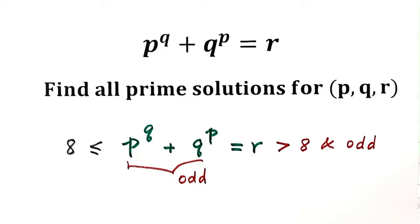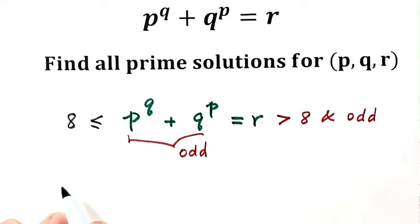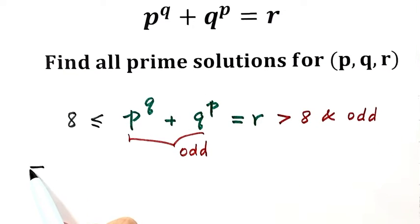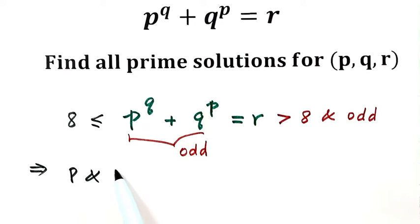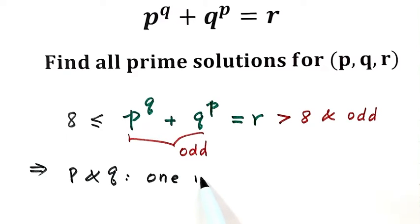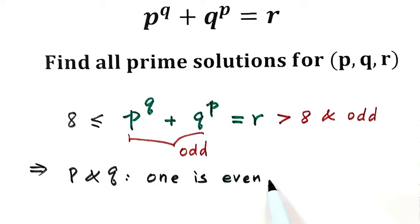This implies that for p and q, one of them must be even and the other one must be odd.